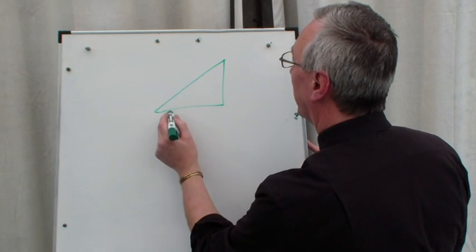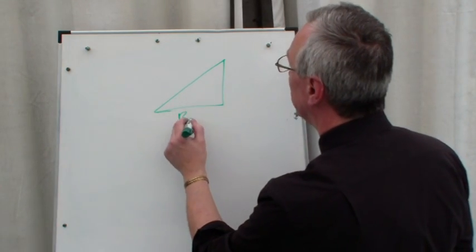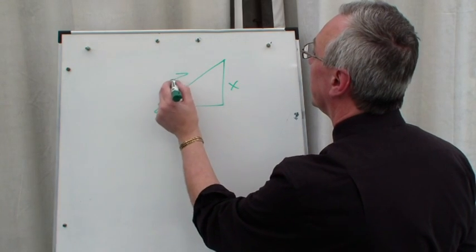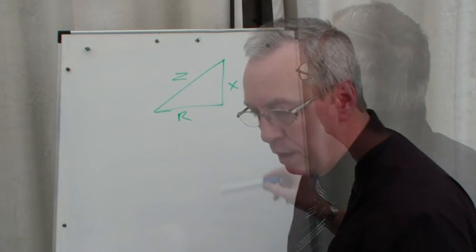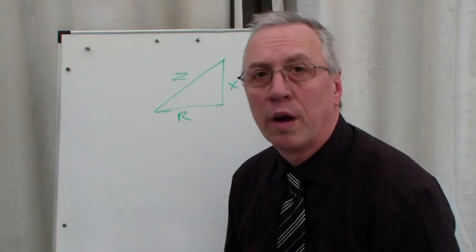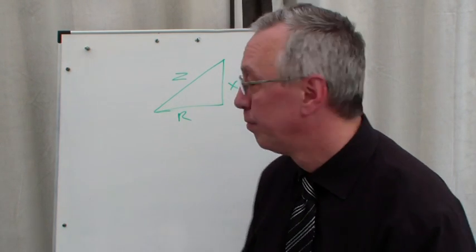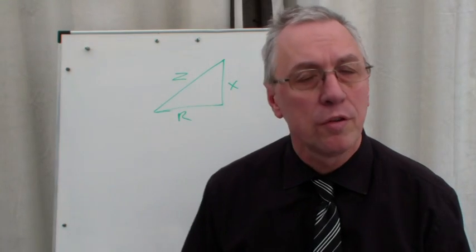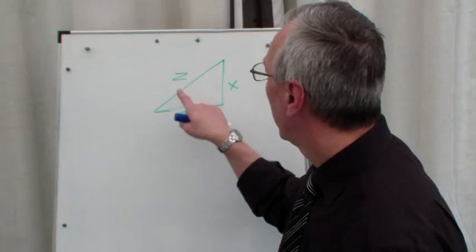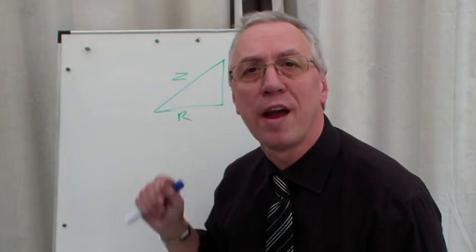So let's take the impedance triangle: resistance, reactance, impedance. Quite often we work out resistance and then we'll work out reactance, or we'll be given resistance and we'll work out reactance.